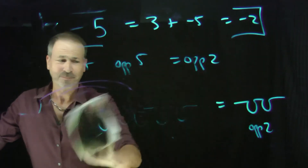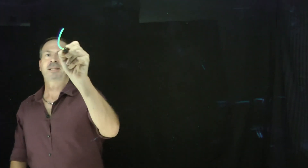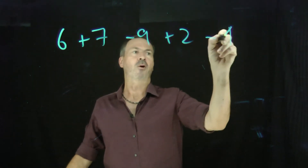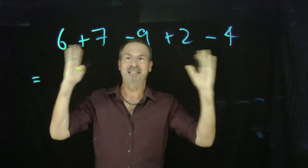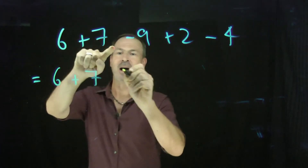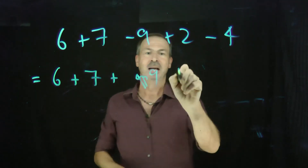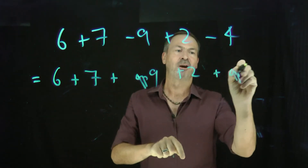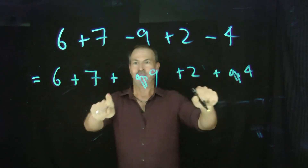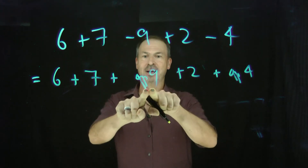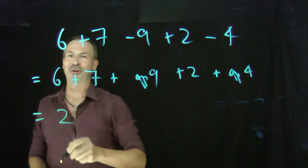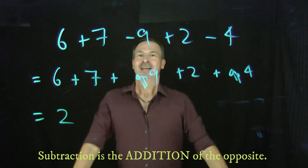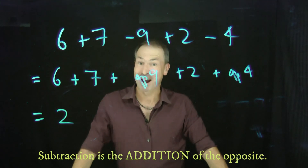One more final example. If my classmates were working on six plus seven take away nine plus two take away four, I'd say: just think addition. Subtraction is the addition of the opposite. That's six piles, plus seven piles, plus nine holes, plus two piles, plus four holes. Seven piles and two piles makes nine piles — and nine piles with nine holes all cancels. Then six piles and four holes leaves two piles. The answer is two. Subtraction is the addition of the opposite, and that is a very powerful way to think of things.